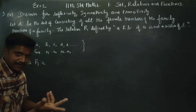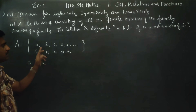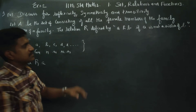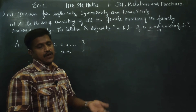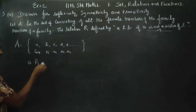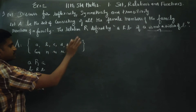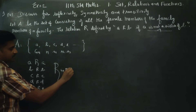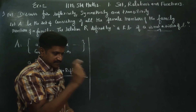A is related with A, B is related with B, C is related with C, D is related with D, E is related with E — all are correct. Therefore R is reflexive. Now we check symmetry.